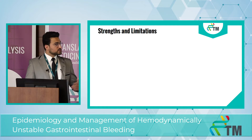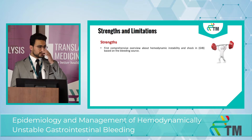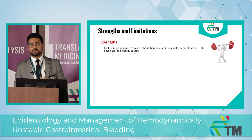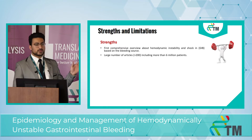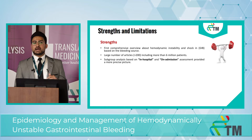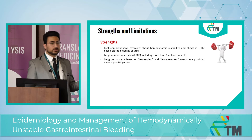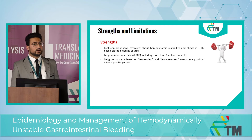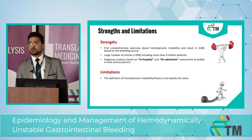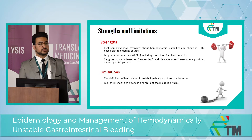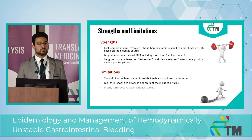Regarding strengths and limitations: this is the first comprehensive overview assessing hemodynamic instability and shock in gastrointestinal bleeding based on bleeding source. We have over 200 articles with a population exceeding 6 million patients, and subgroup analysis by time of assessment provided more precise data. As a limitation, the definition of hemodynamic instability and shock was not consistent across included studies — we lacked a definition in almost one-third of studies — and most studies were retrospective observational.